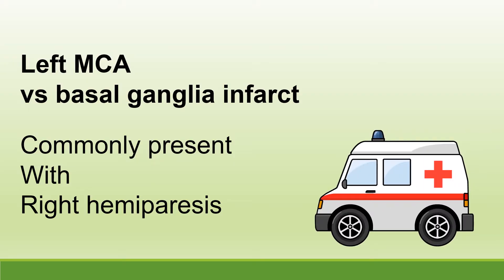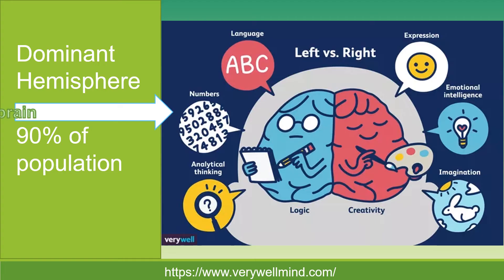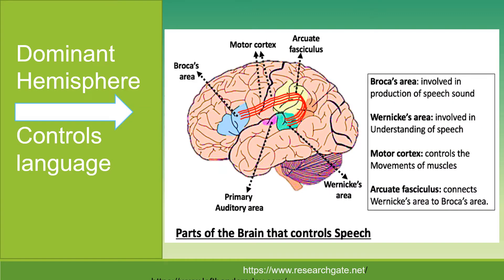Both types of stroke commonly present with right hemiparesis. The dominant hemisphere is in the left brain in 90% of the population. The left hemisphere controls speech function.